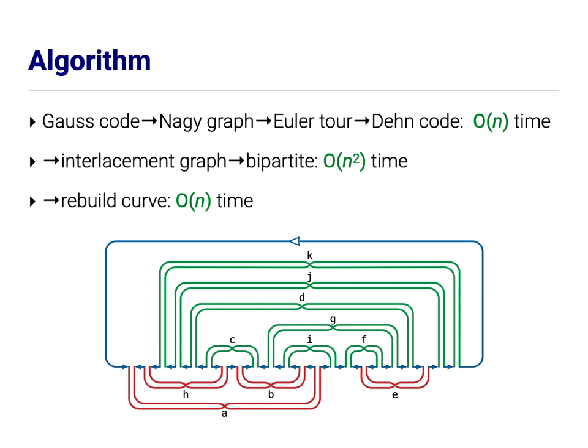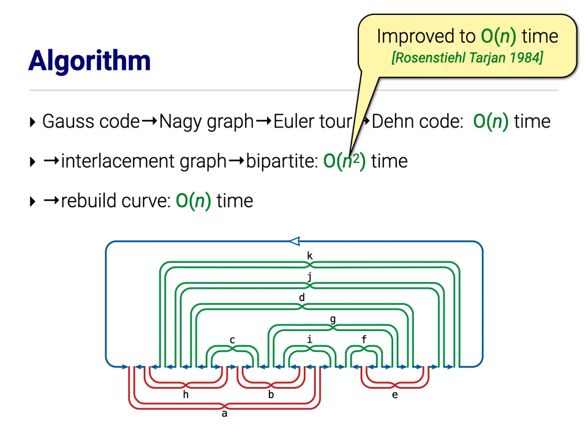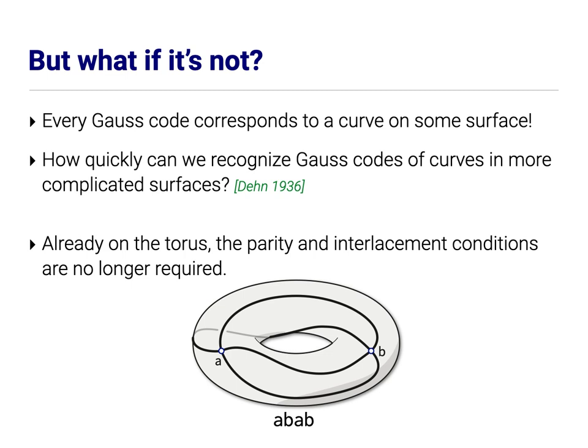And this algorithm is actually still used by people who do build knot tables to test whether Gauss codes actually correspond to real curves. And in fact, even the n squared term can be simplified to linear. This was done by Rosenstiehl and Tarjan in 1984. And the idea is they don't actually build the interlacement graph explicitly. I believe they end up computing a spanning forest of the complement of the graph, which is just enough information to be able to prove that the graph is bipartite and partition the vertices. So great. Linear time. Quadratic if you don't want to be fancy.